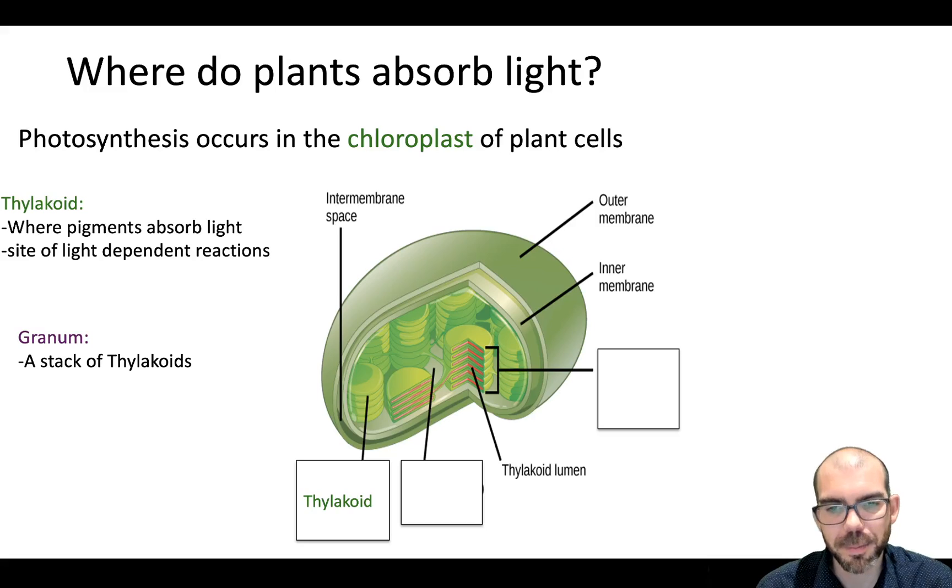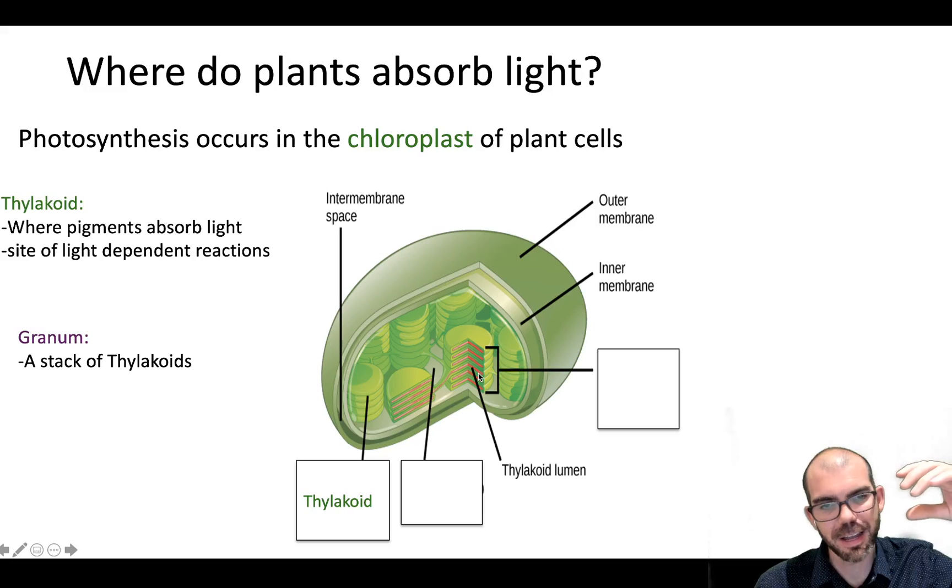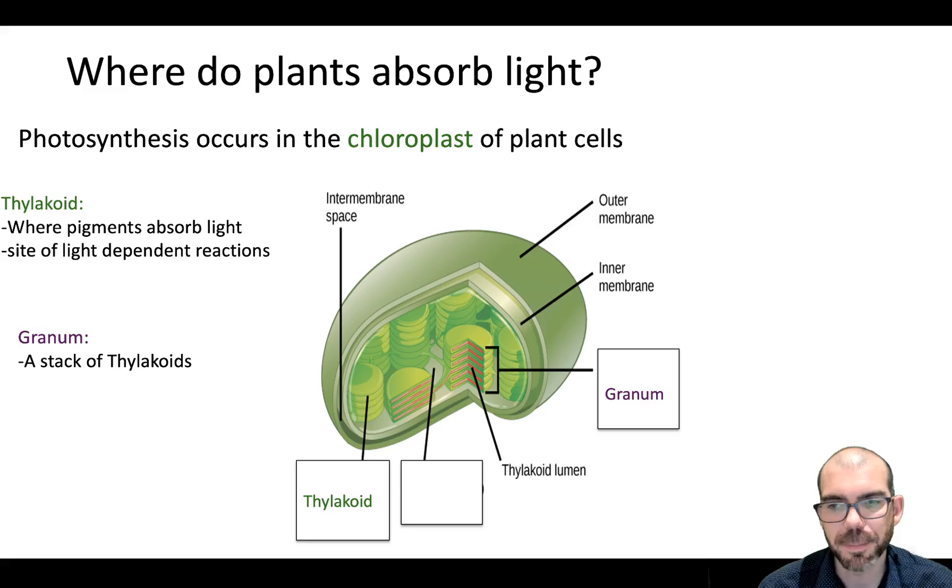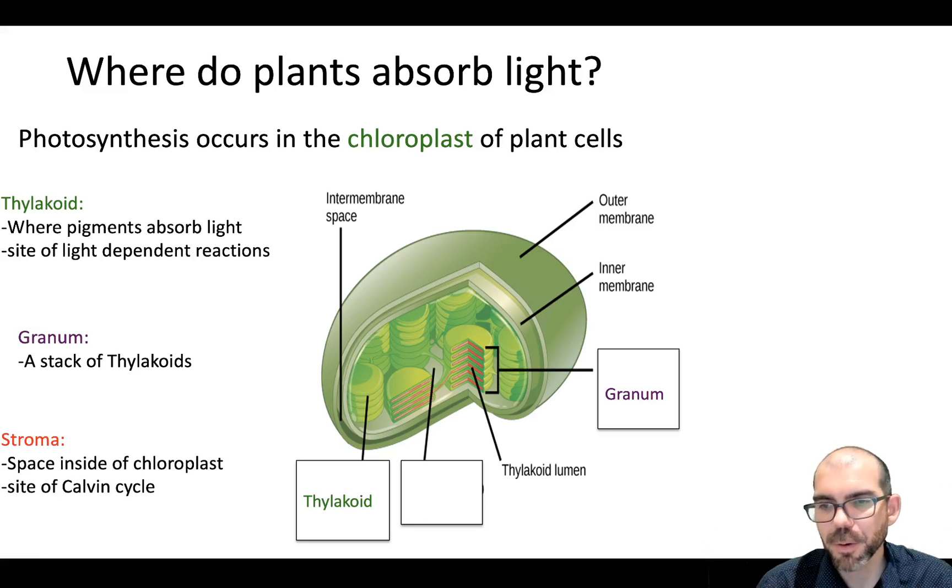The next structure is a granum. You can see these individual thylakoids are stacked up in a tower or a series of disks. We call that the granum. The granum is just the term for a stack of thylakoids. There is space surrounding these thylakoids in the chloroplast, and we refer to that as the stroma. This is just a jelly-like substance, and it is the site for where the Calvin cycle, also known as light-independent reactions, will occur. We will cover that also in the next video.